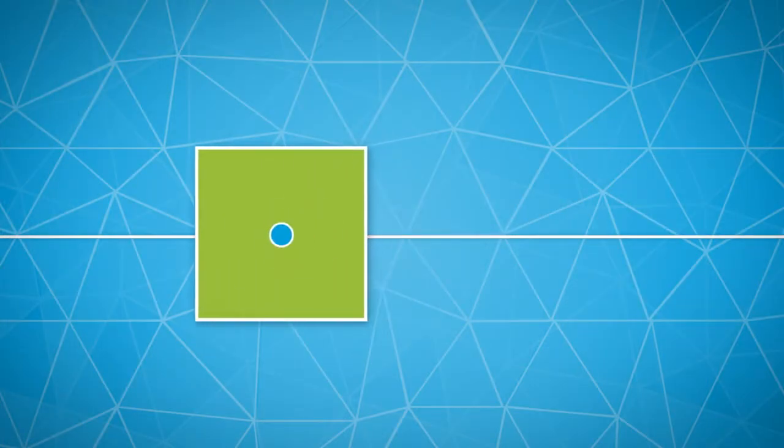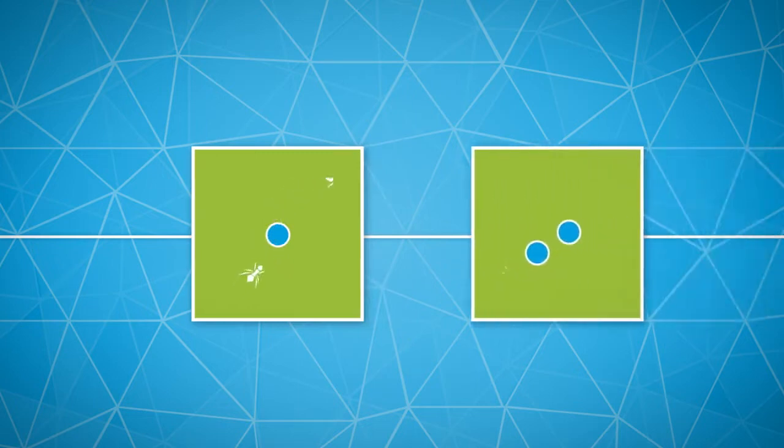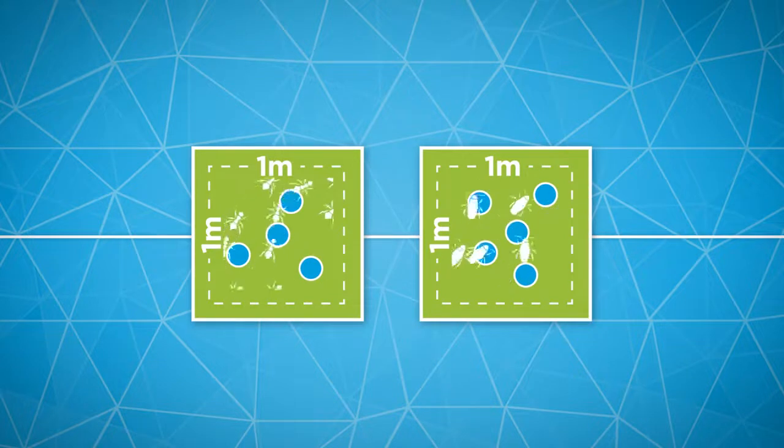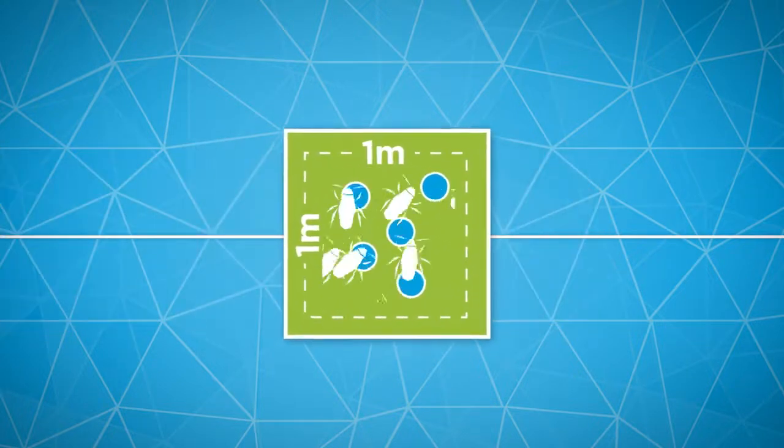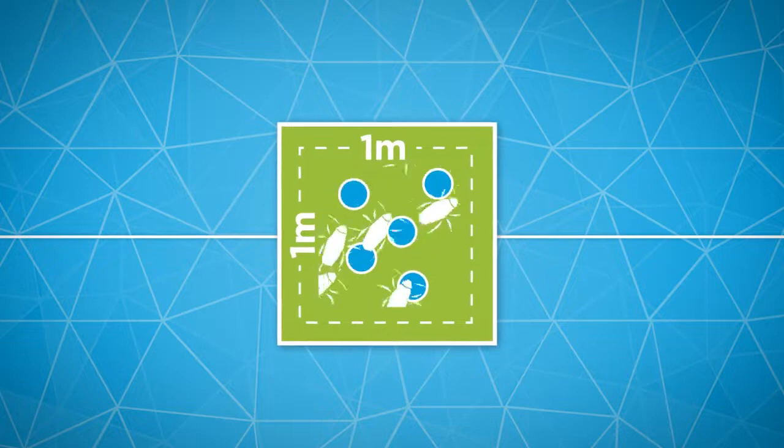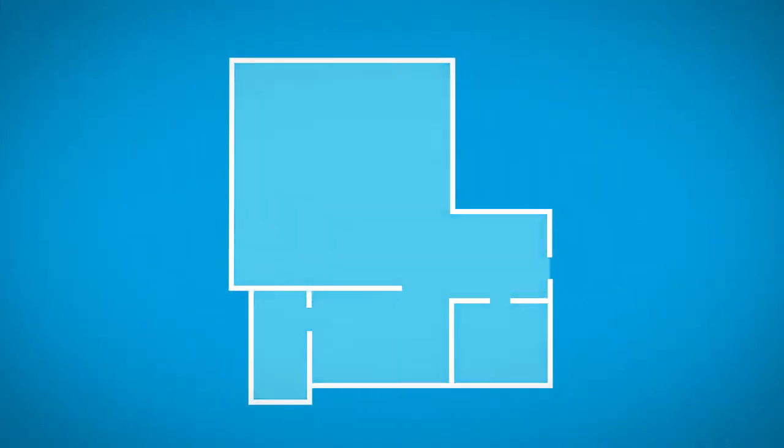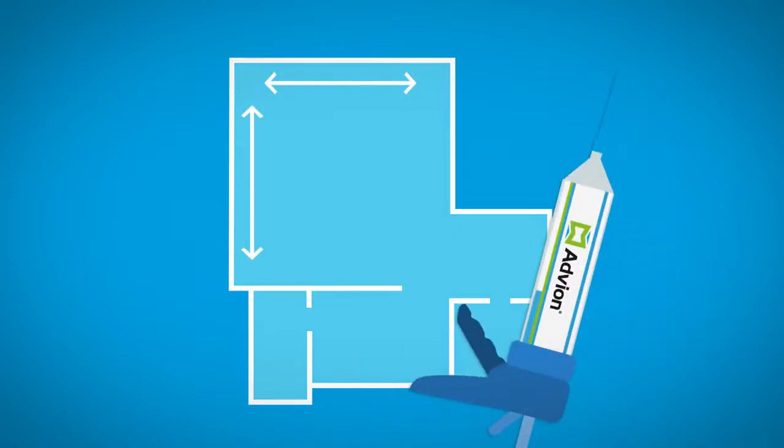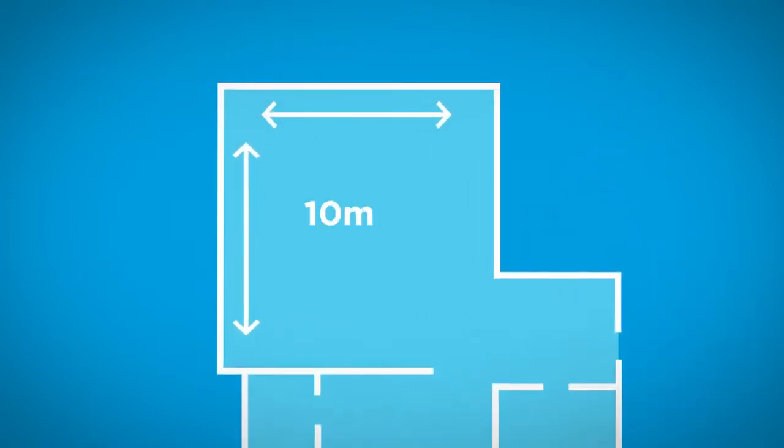The recommended dose of Advion gel bait is one spot for ants and two spots for cockroaches per metre squared for a low infestation, and up to four to five spots per metre squared for both cockroaches and ants in case of a high infestation or an infestation of the large oriental or American cockroaches. Measure the size of the room to be treated and apply the corresponding amount of gel. For example, in a ten metre squared room, apply twenty spots if there is a low infestation.